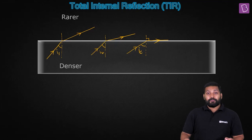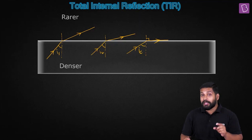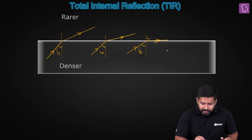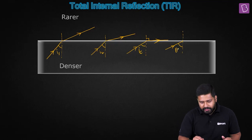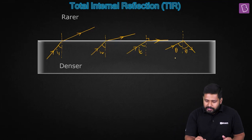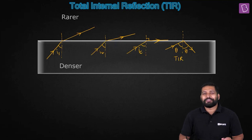This special angle of incidence is called the critical angle, or IC. At the critical angle, the angle of refraction is equal to 90 degrees. And if you go on increasing the angle even further — if the angle of incidence exceeds the critical angle — then the total light gets reflected back into the same medium. This is nothing but total internal reflection.